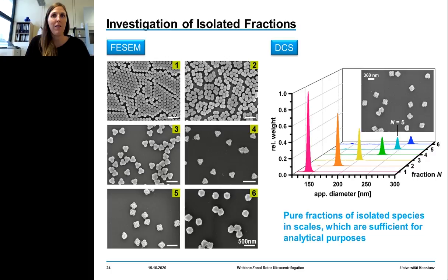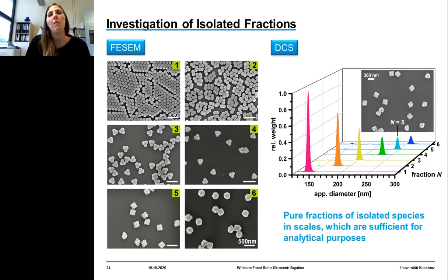Let's combine these with quantitative data. Here we have the particle size distribution of all six fractions of colloidal molecules, and they are basically free of any foreign species. Separation using the swinging rotor allows for separation of about 20 milligrams of colloidal molecules, which is sufficient for analytical purposes.